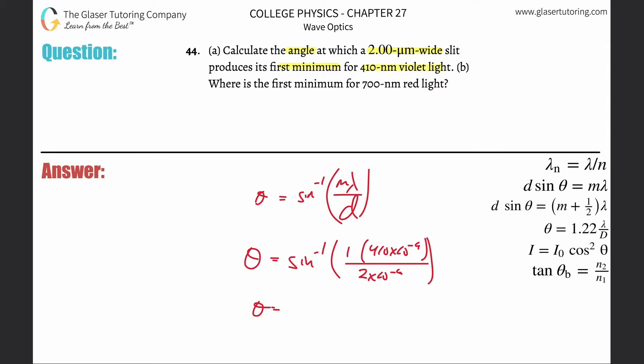So inverse sine of 410 times 10 to the minus ninth divided by two times 10 to the minus sixth. And what do you get? 11.8 degrees. So that is the angle that produces the first minimum.